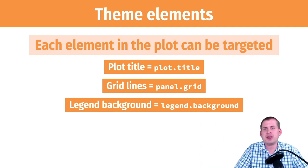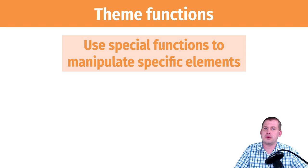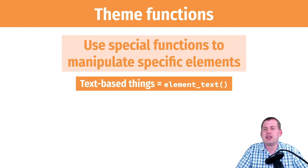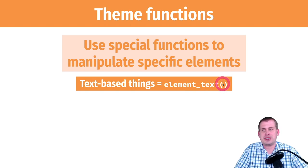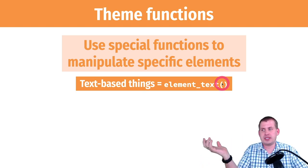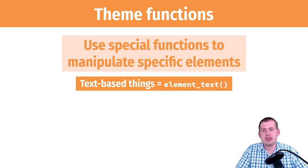The way you deal with these elements is each type of element has a function associated with it. If something is text-based like your legend text, subtitle, caption, or axis text, you use the element_text function. Inside those parentheses you do things like size equals something, color equals something, font equals something, font face equals something—so you can have italic, bold, plain, or bold italic.